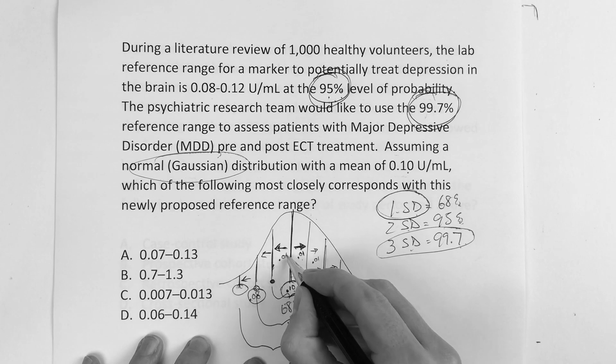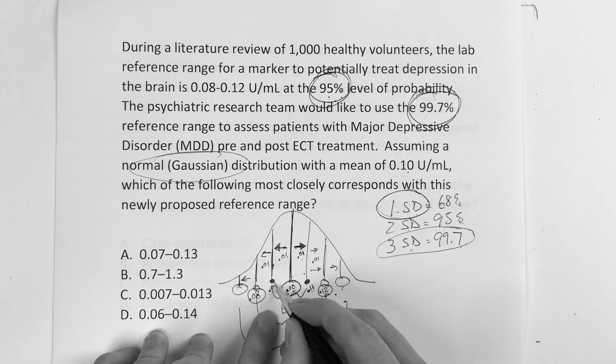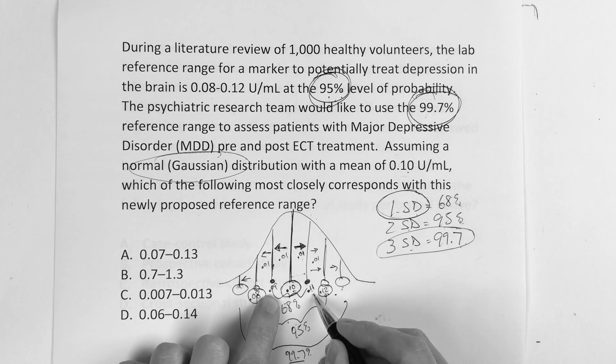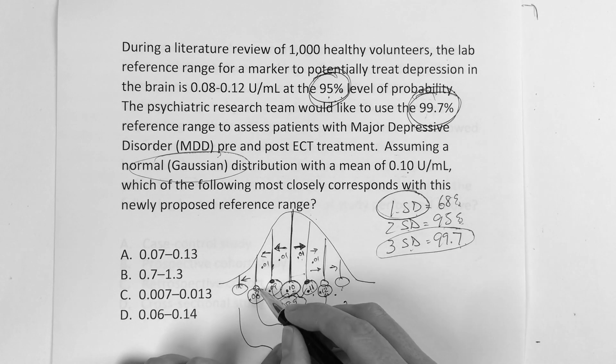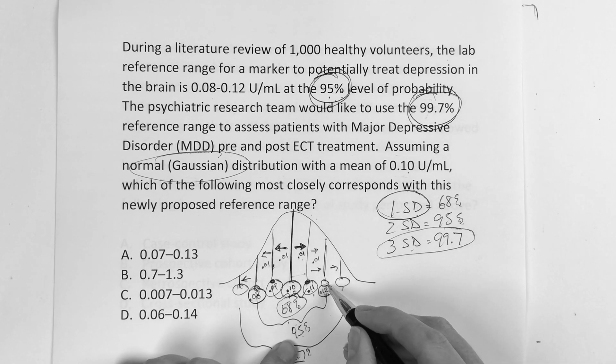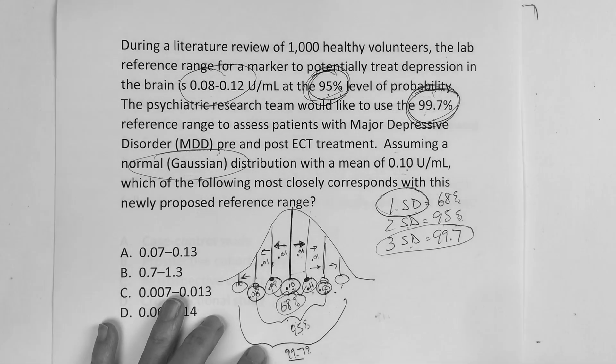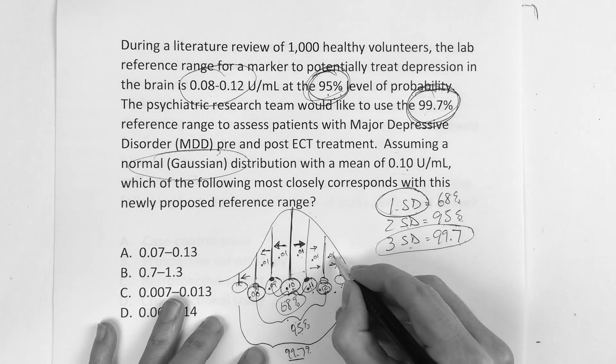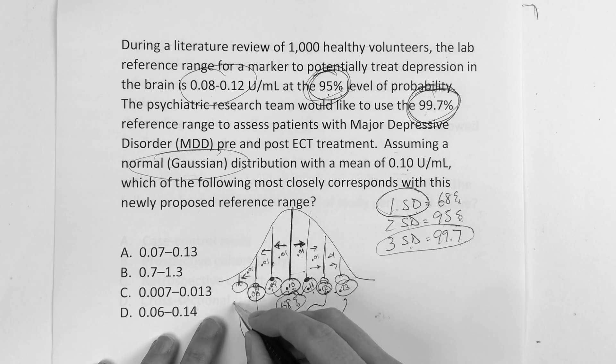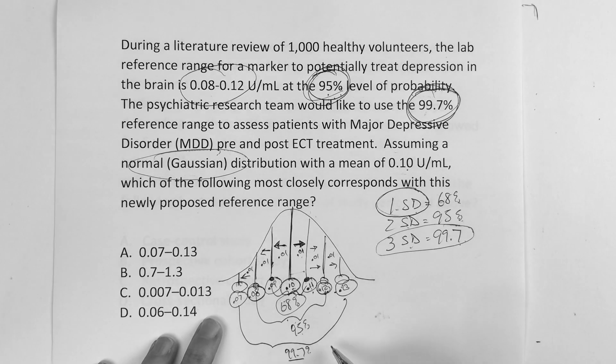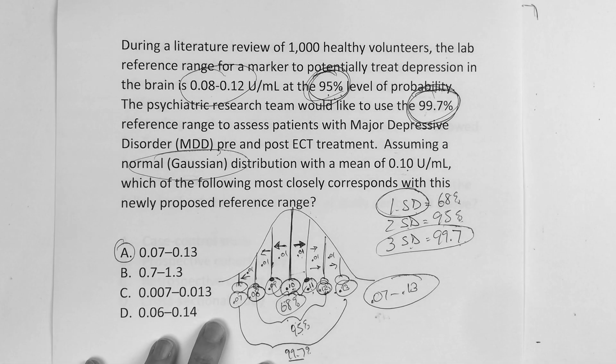They went 0.01 in each direction from here to get these reference ranges. So for 68%, you'd be between 0.09 and 0.11. For 95%, you'd be between 0.08 and 0.12. Now for this 99.7%, what do we got to do? We just got to go out another extra deviation. And that would be 0.13, and back here we would go down to 0.07. So 0.07 through 0.13, answer choice A.